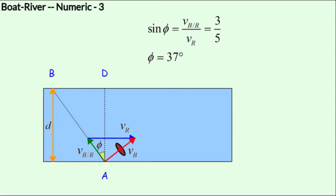This simplifies down to a very simple equation. Sine of phi equals vb with respect to r over vr. So given that the speed of the current is higher than the speed of the boat with respect to the river, if we head out at an angle of phi with the vertical such that phi equals the sine inverse of vb with respect to r over vr, then our drift x dc will be at a minimum.